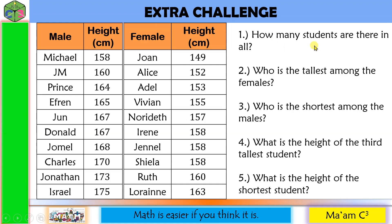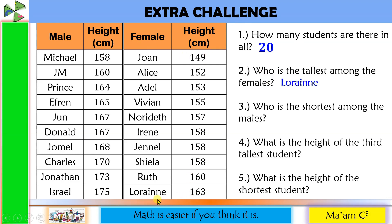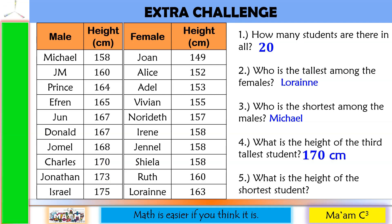Now let us answer these questions. How many students are there in all? There are 10 males and 10 females — 10 plus 10 equals 20 students in all. Who is the tallest among the females? That is Lorraine. Who is the shortest among the males? That is Michael. What is the height of the third tallest student? The tallest is 175 cm, followed by 173, and then 170 cm. What is the height of the shortest student? The shortest among males is Michael and among females is Joanne — and Joanne is shorter, so the shortest student measures 149 centimeters.